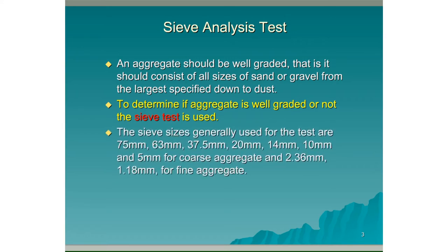The sieve sizes generally used for the test are 75mm, 63mm, 37.5mm, 20mm, 14mm, 10mm, and 5mm for coarse aggregate, and 2.36mm and 1.18mm for fine aggregate — ranging from 75mm in diameter down to 1.18mm for fine aggregate.